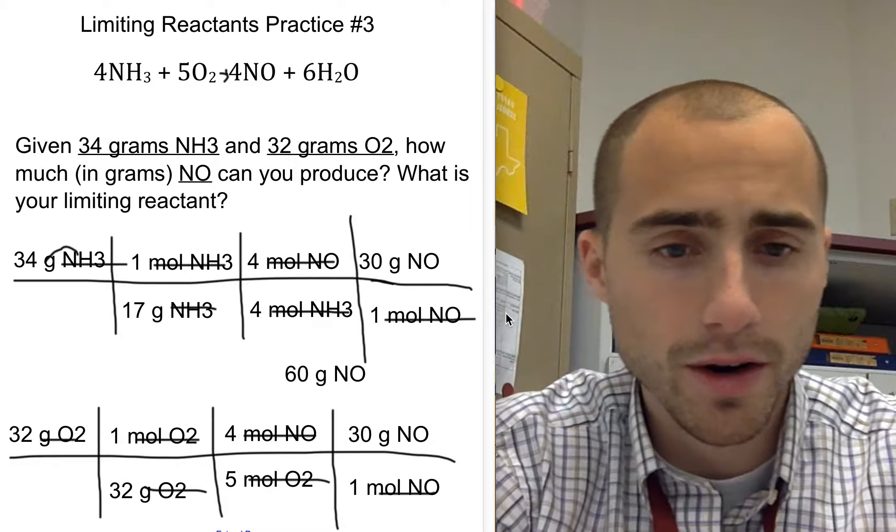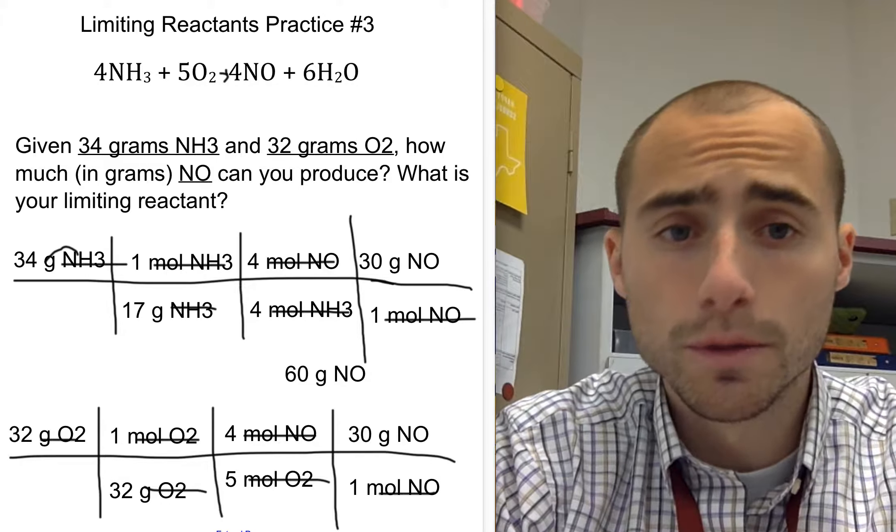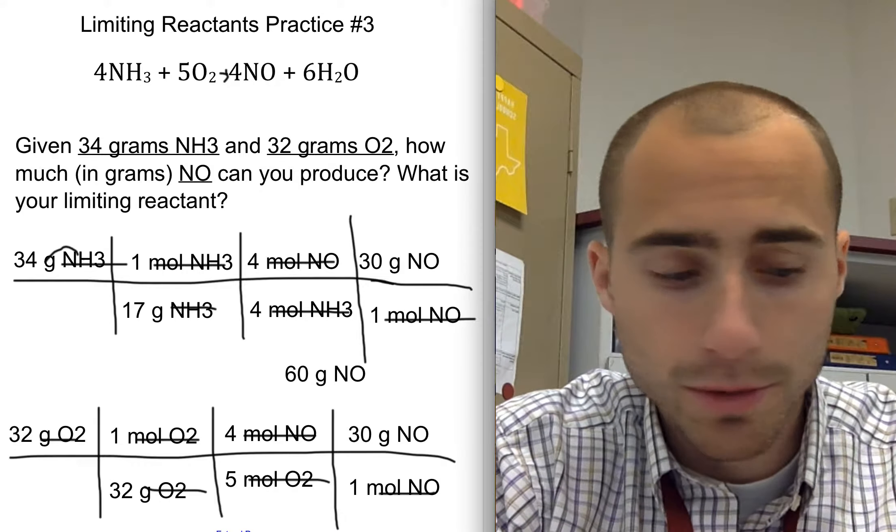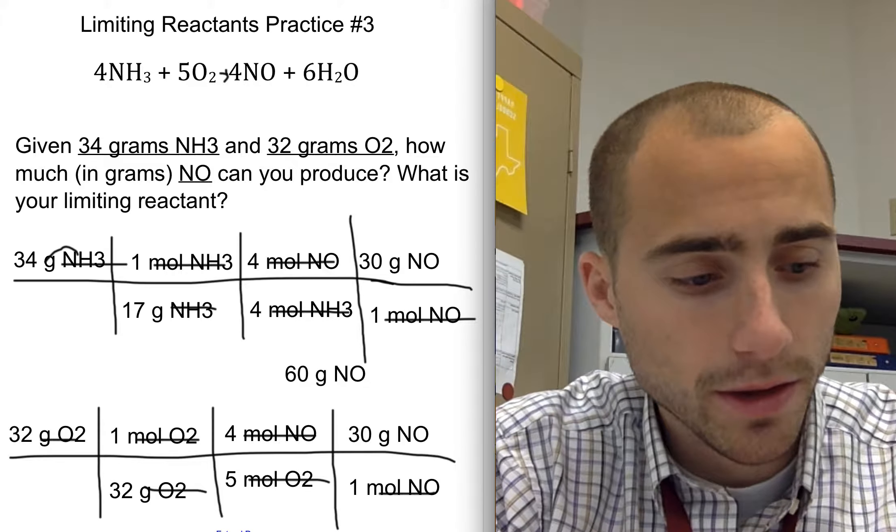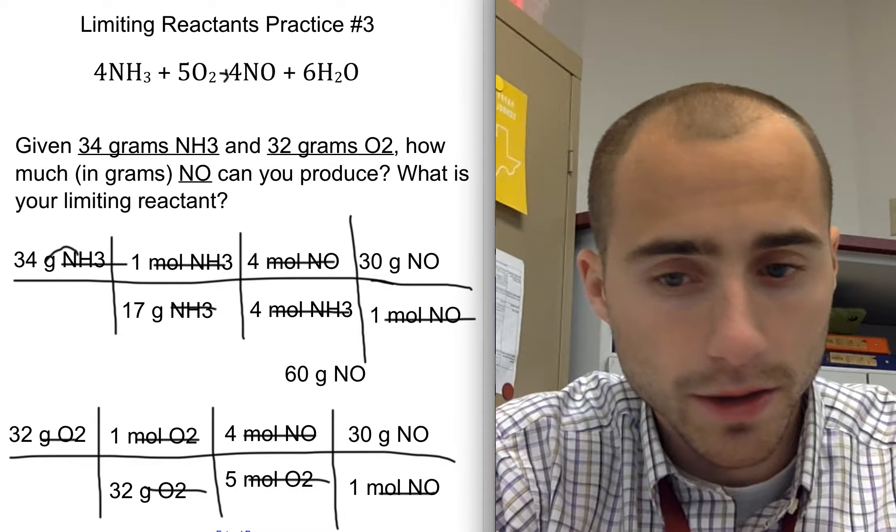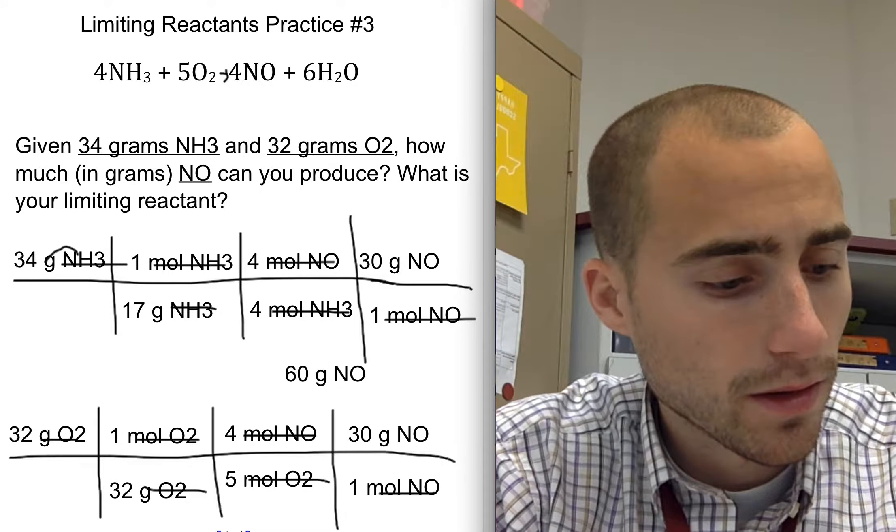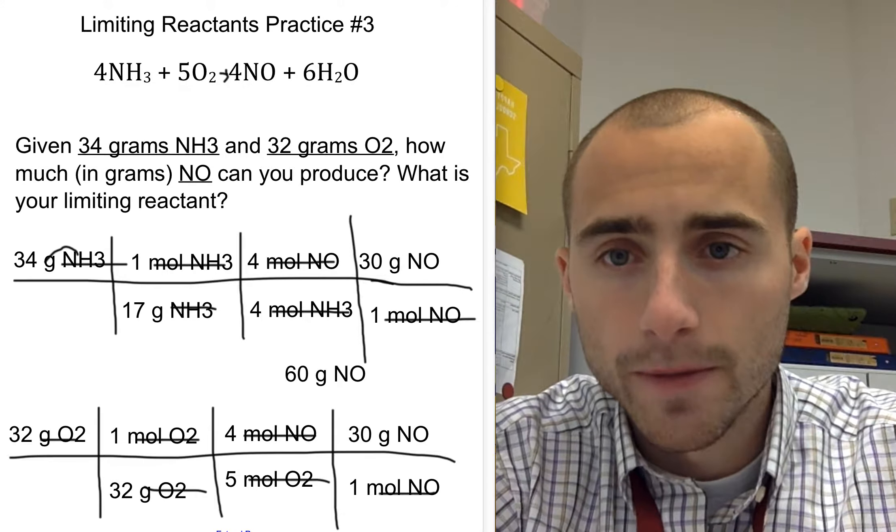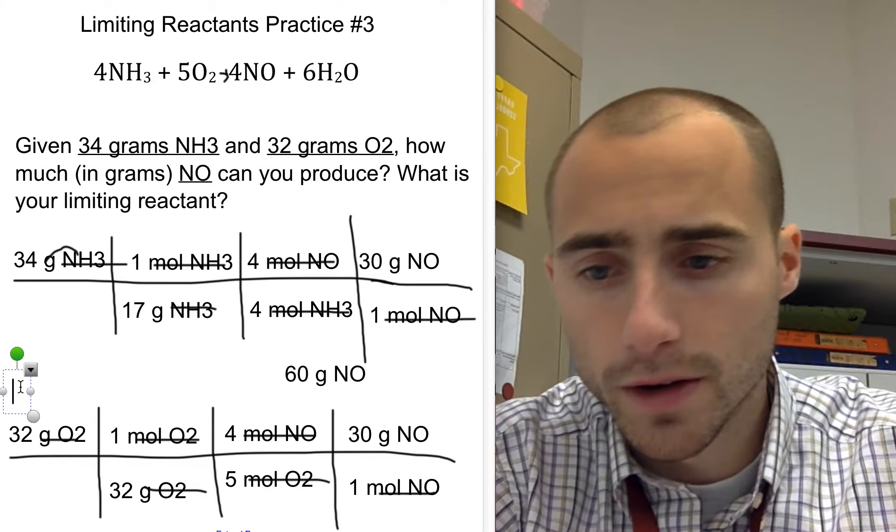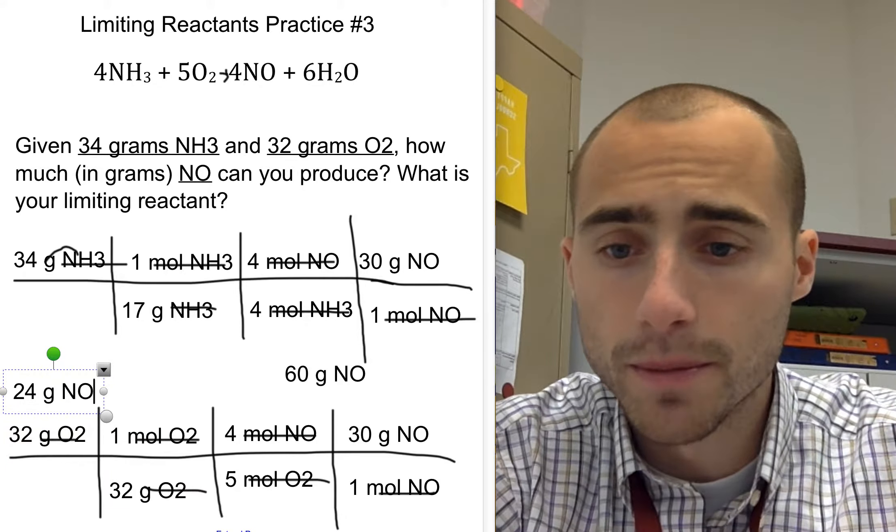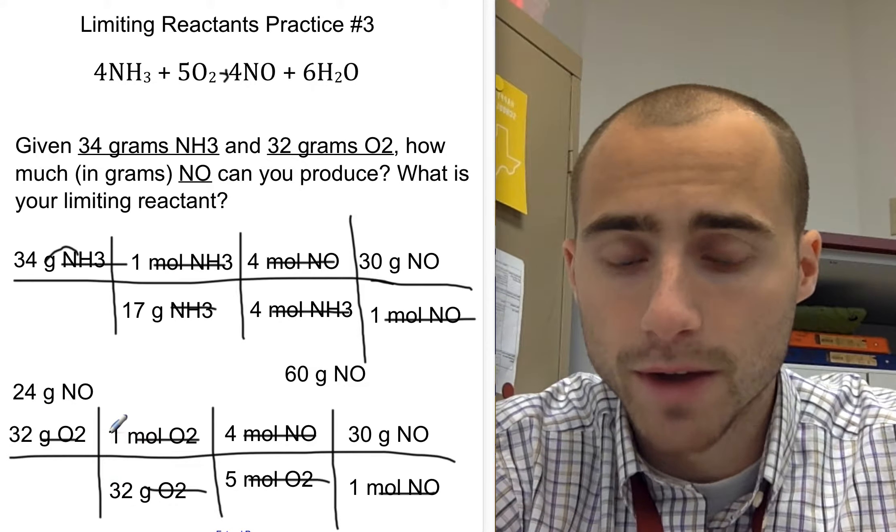So now I just multiply straight across and solve for my limiting reactant. So I do 32 multiplied by 4 multiplied by 30 and then I divide that by 32 times 5. I end up with 24. 24, I'm going to put it over here, 24 grams of nitrogen monoxide from my 32 grams of oxygen.